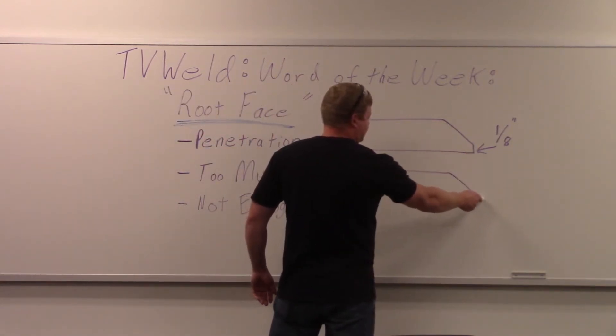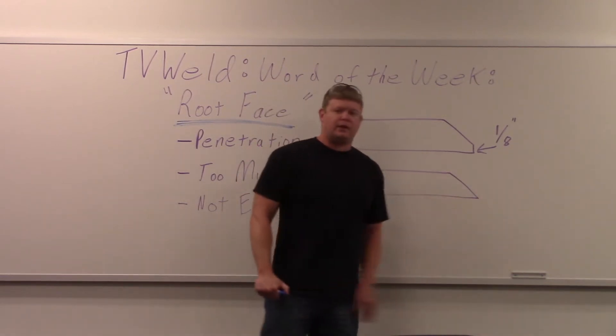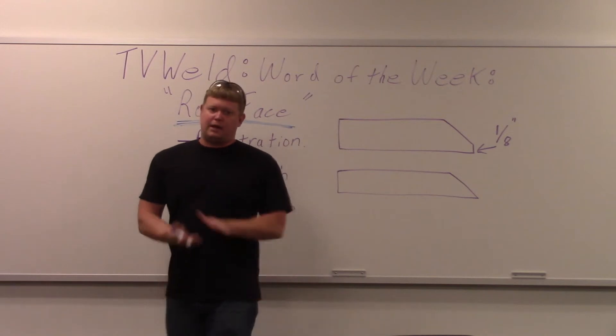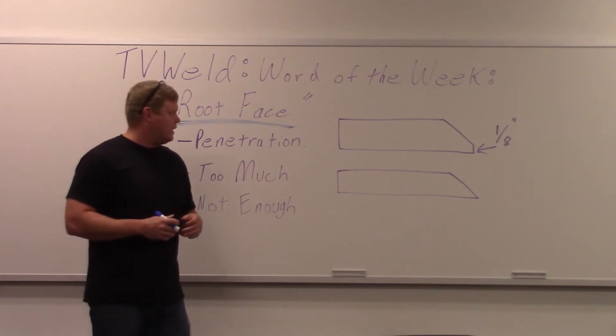This is one without a root face. So basically it's coming down to a point. You can use this in something like you're using backing. If you've got a backing bar on it you want to come right down to a point and crank it up so that that weld wets in, you get full penetration on that.